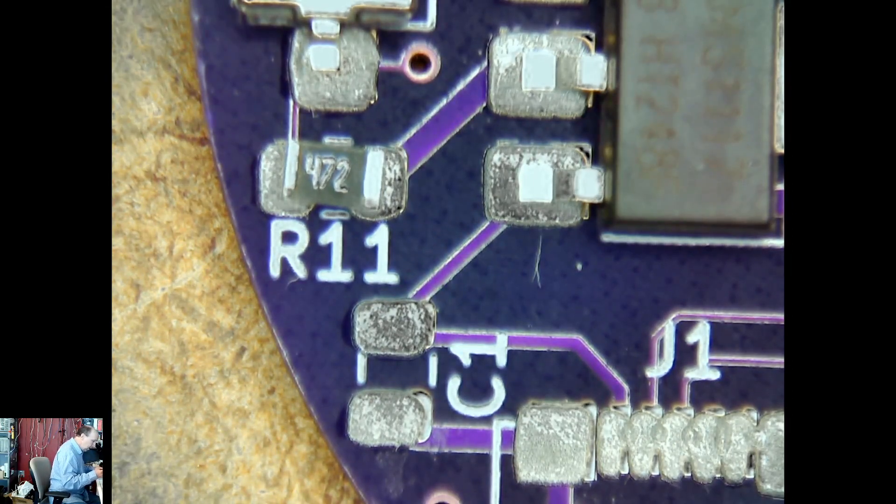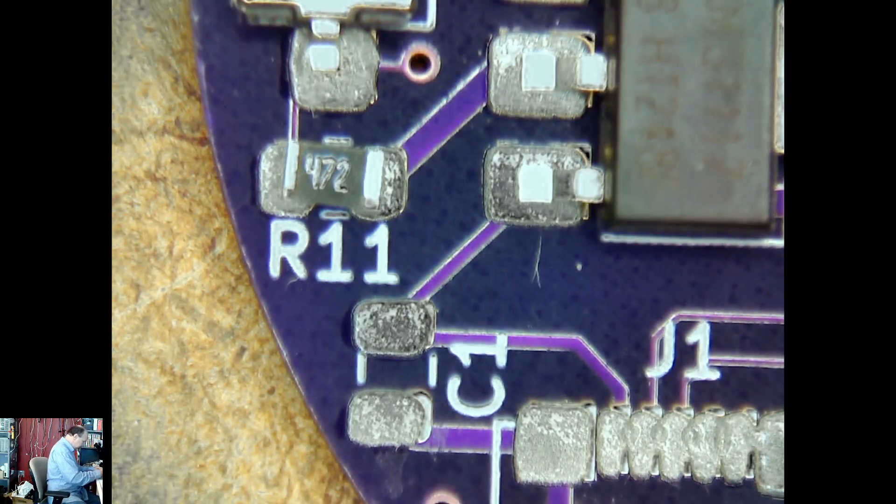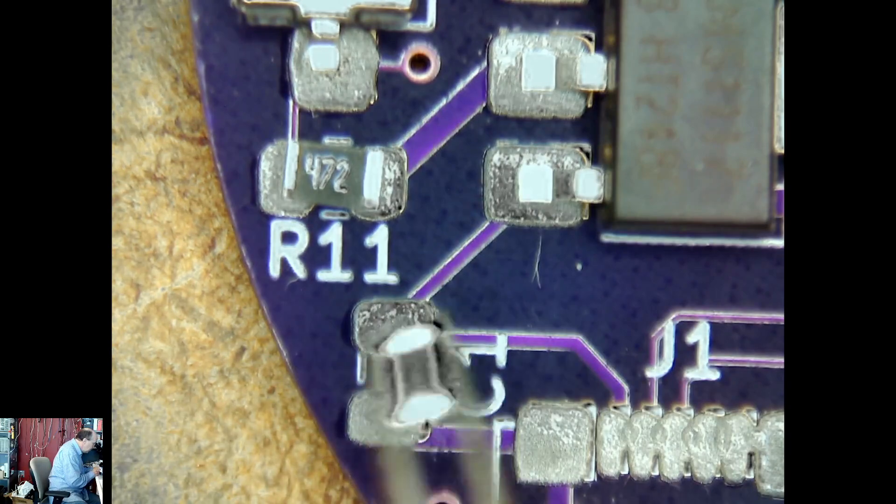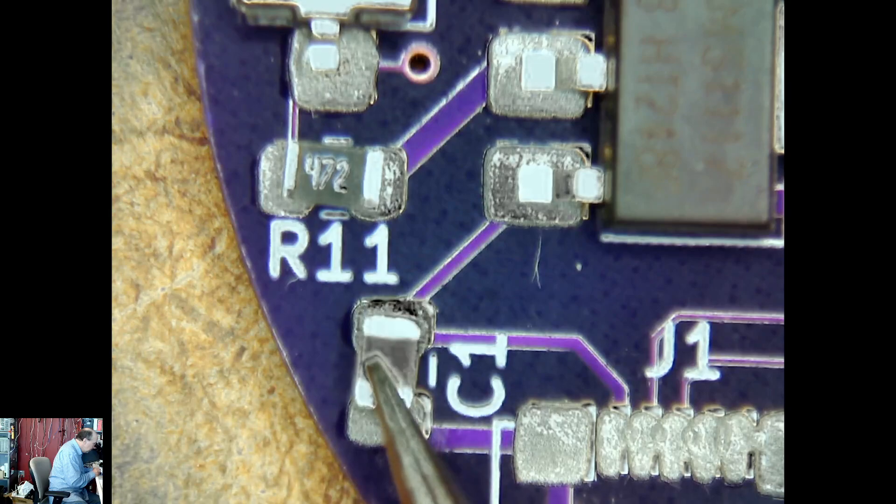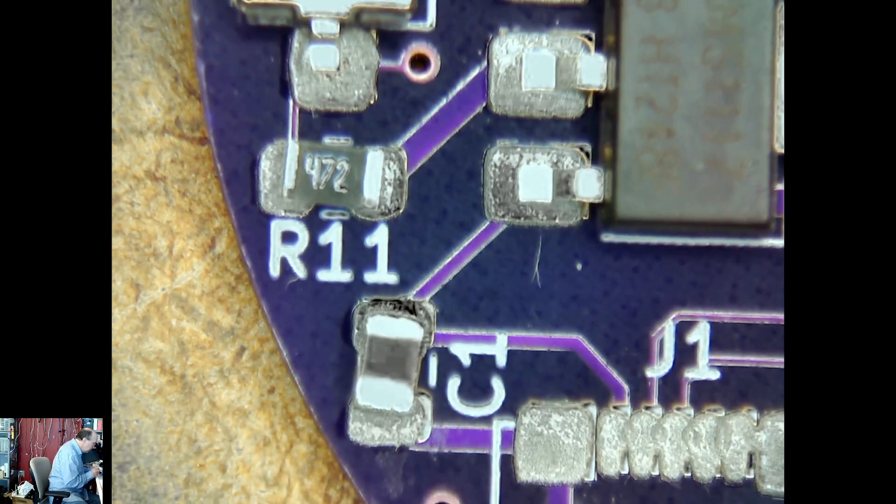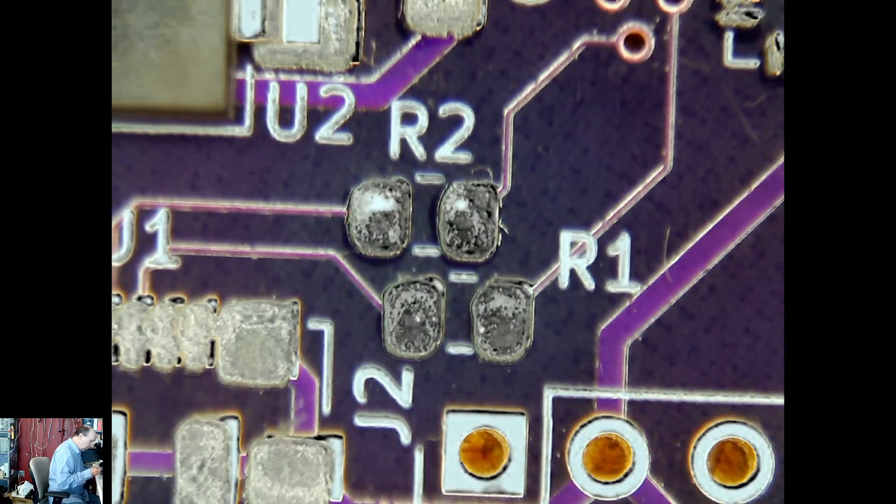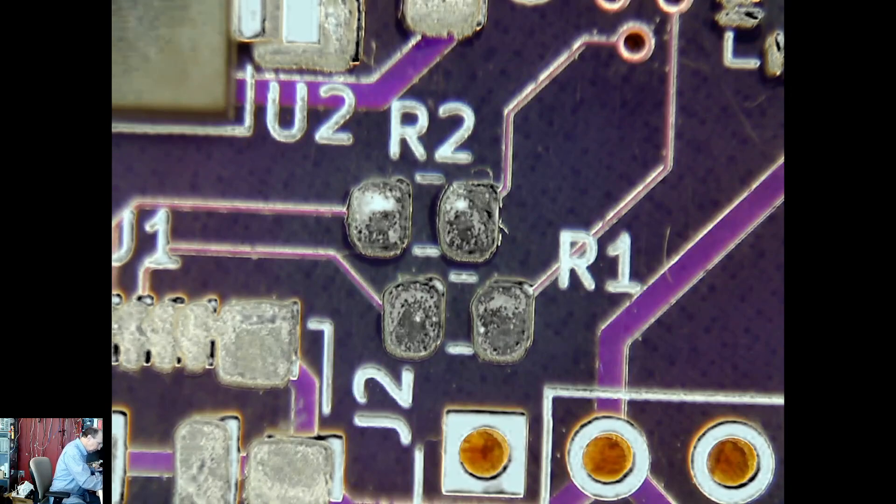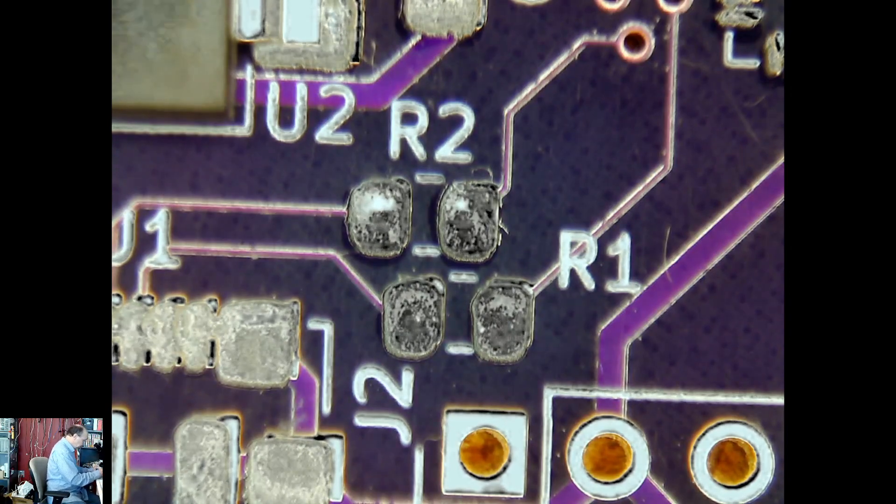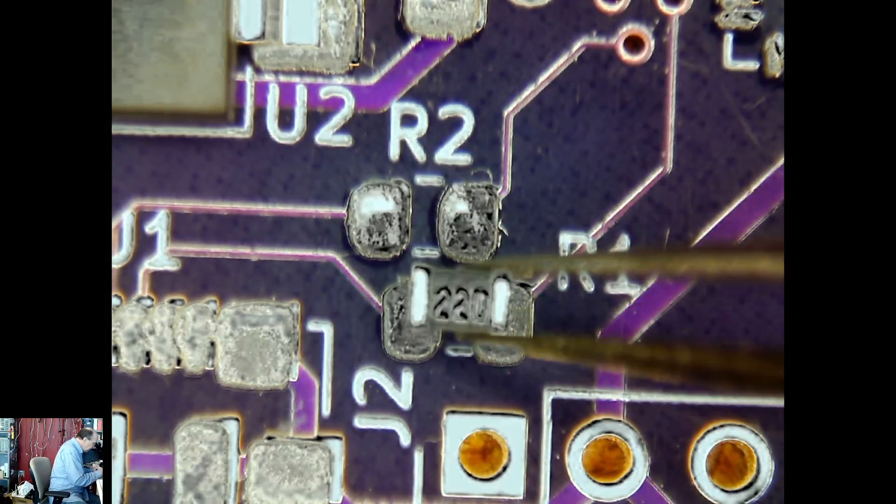C1 is 100 nano. R1, R2 are 27 ohms. You know I didn't have 27 so I'm going to put in 22's.